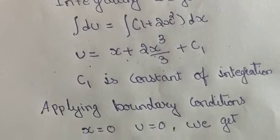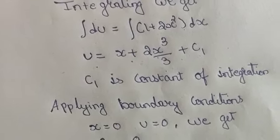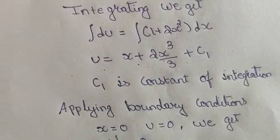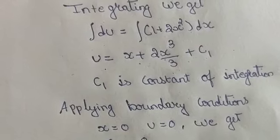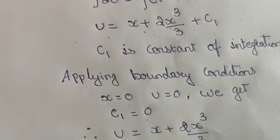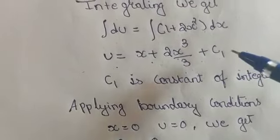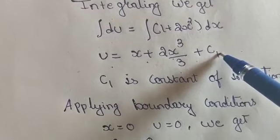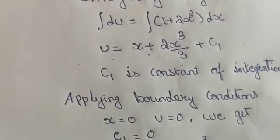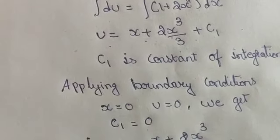Applying boundary conditions, it has been applied at the starting here. That means at x equals 0, u will be 0. Then we get C1 equals 0. In this particular equation, wherever there is x you substitute 0, wherever there is u you substitute 0. Therefore we will be getting C1 equals 0 here.